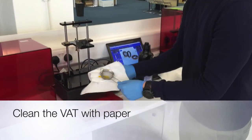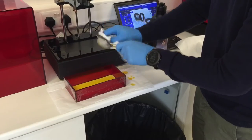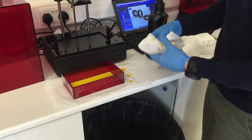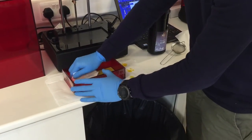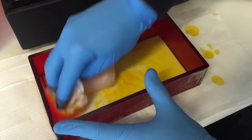To clean the vat, simply use some tissue paper. You want to wipe away any excess and get rid of as much as possible.